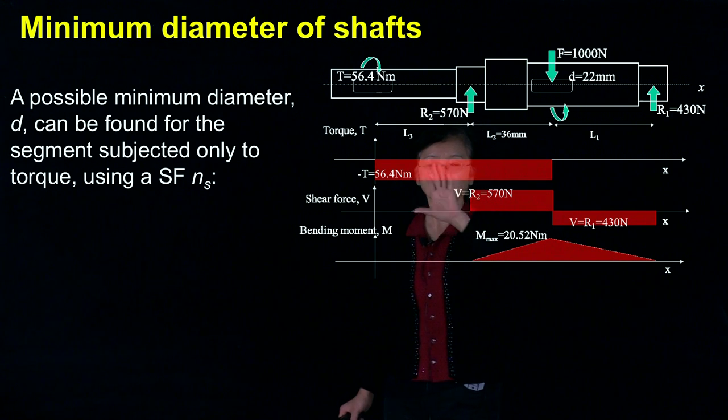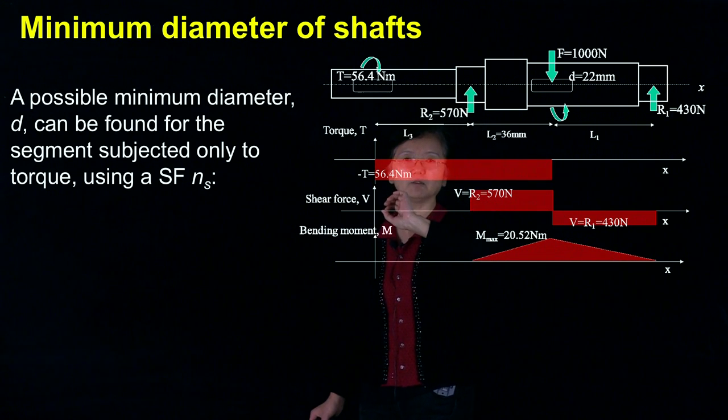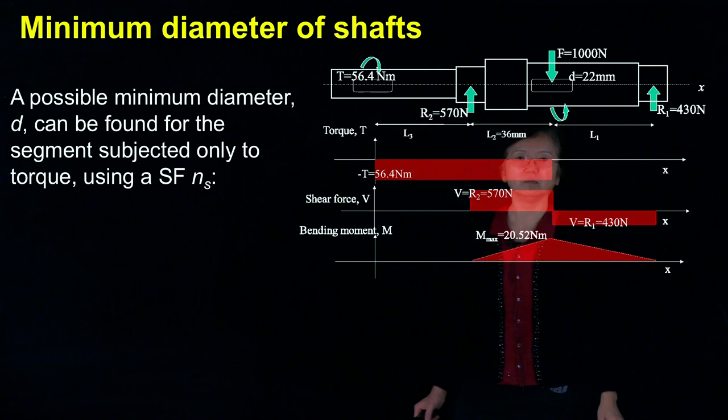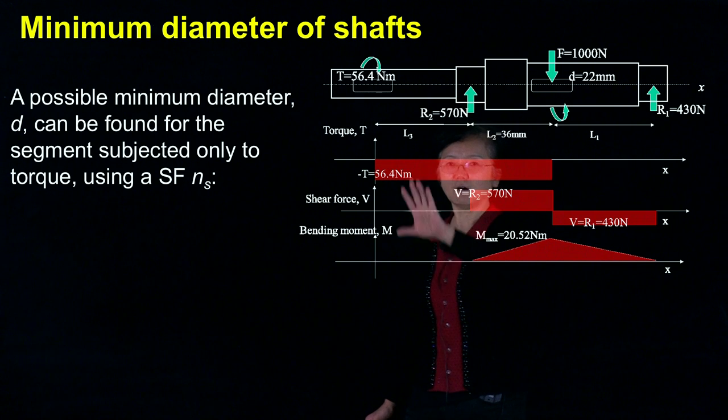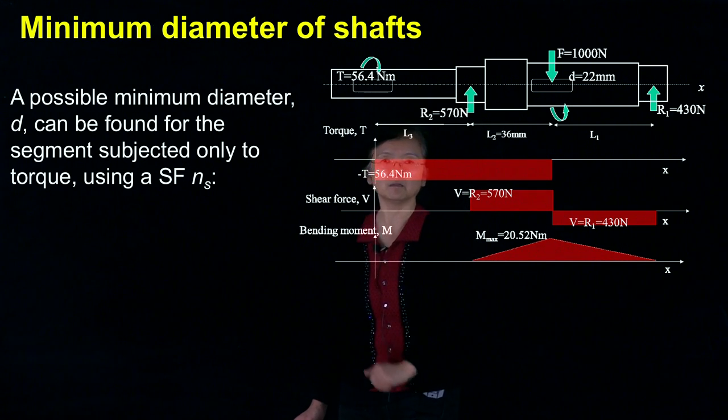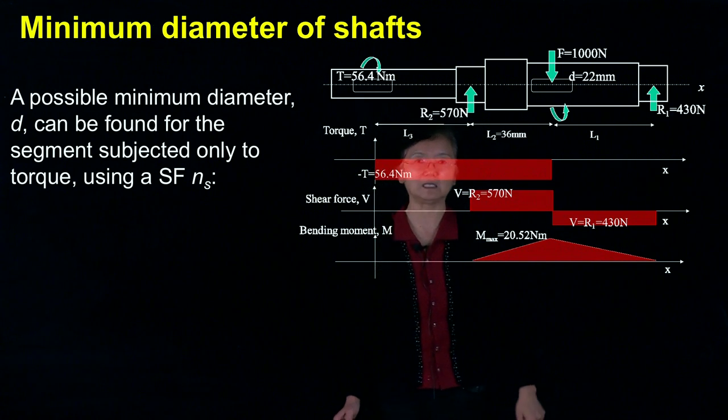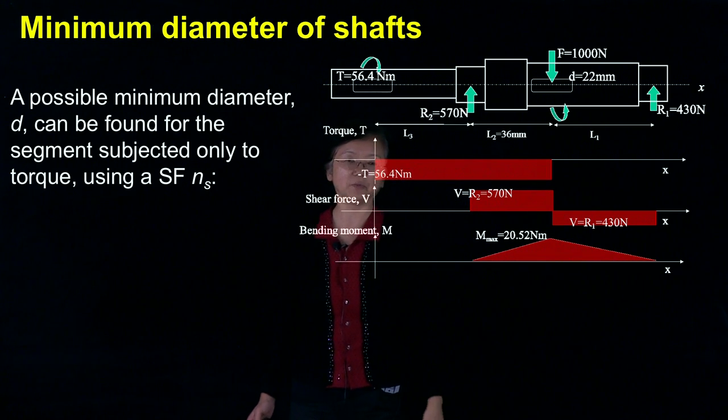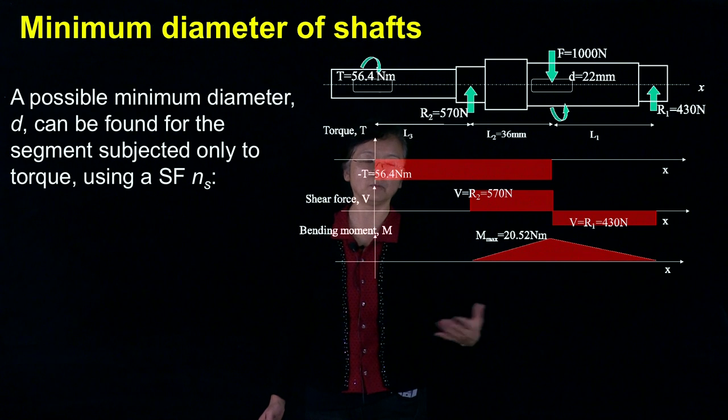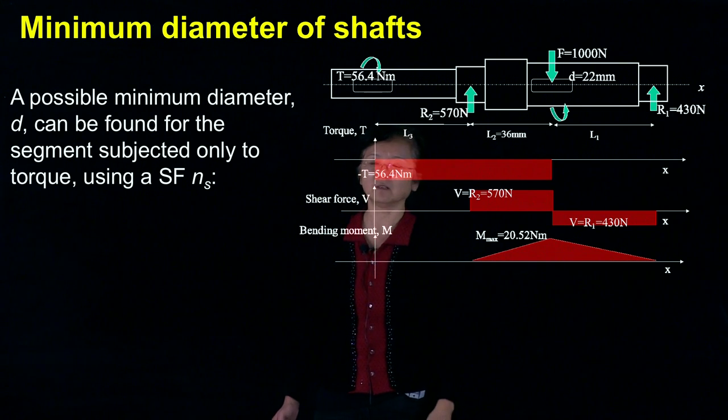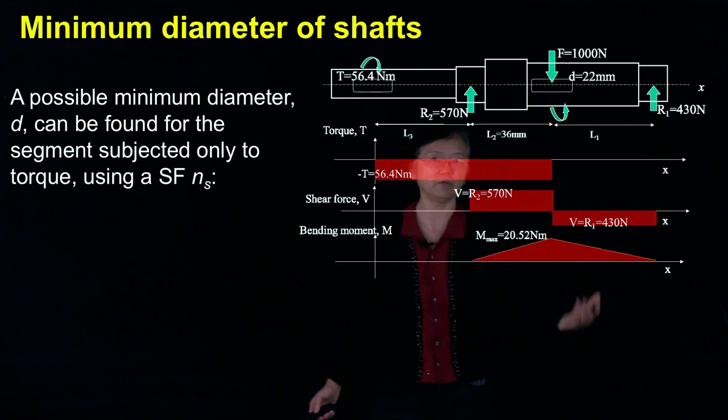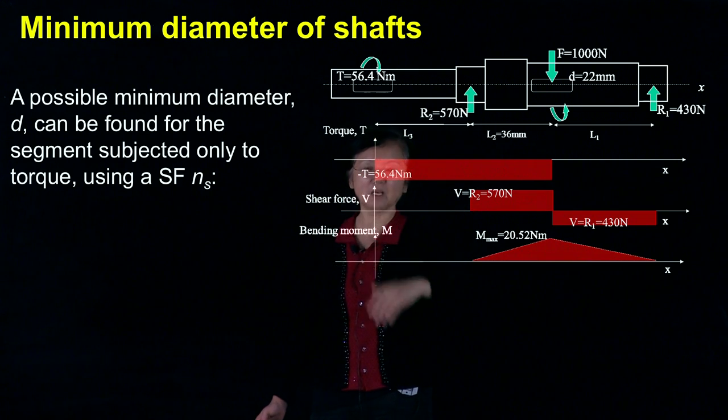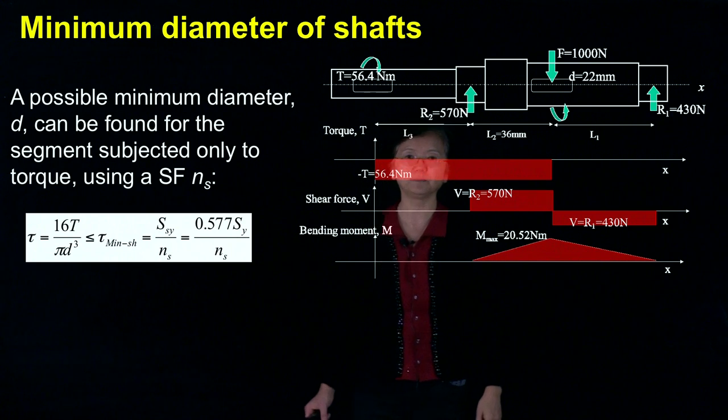Utilizing the location where we only have a torque applied, we perhaps can determine the minimum shaft diameter. I call this, from the current time, a possible minimum shaft diameter D. And to do that, we need a factor of safety, assuming that you can pick up one. Let's see, 1.1, 1.2, things like that, or 1.5.